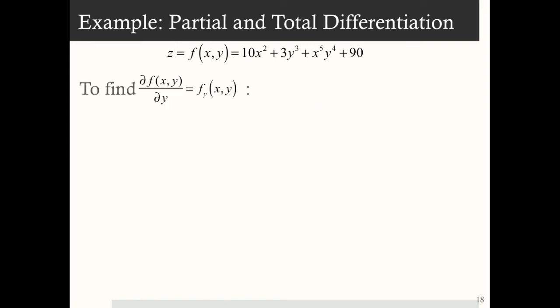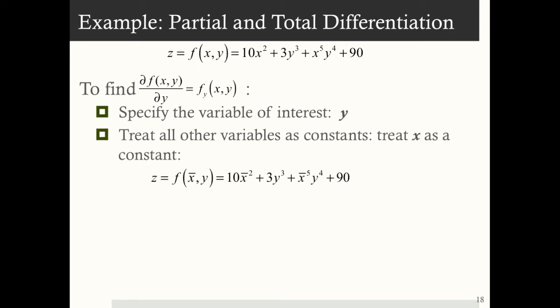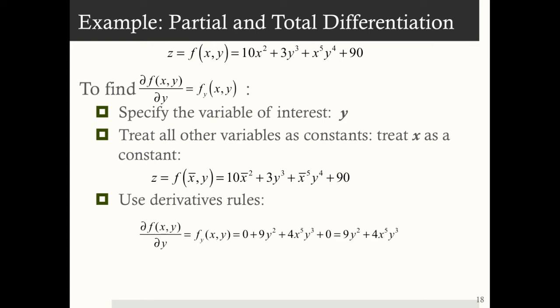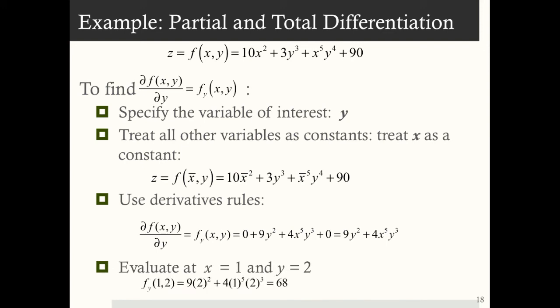Now let's find the partial derivative with respect to y. We specify y as the variable of interest and treat x as a constant — I've rewritten the equation with a bar above x. Using the sum, constant, and power rules: the derivative of 10x² with respect to y is 0; the derivative of 3y³ is 9y²; the derivative of x⁵y⁴ is 4x⁵y³; and the constant term gives 0. This simplifies to ∂z/∂y equals 9y² plus 4x⁵y³. Evaluating at x equals 1 and y equals 2 gives 68 — so at this point, when y changes, z changes by positive 68.